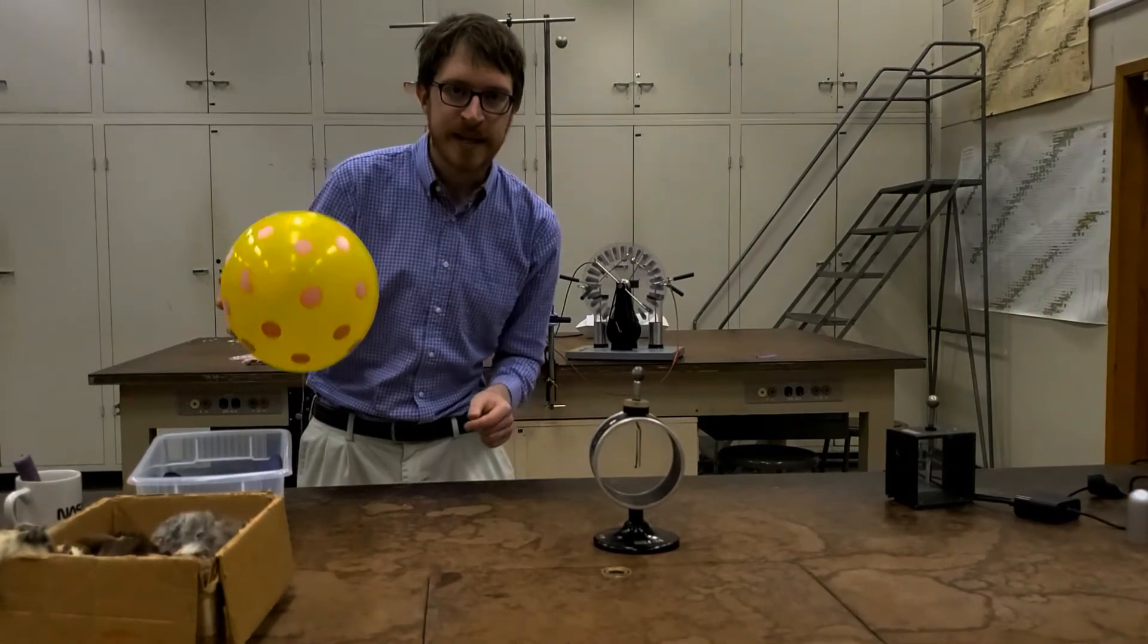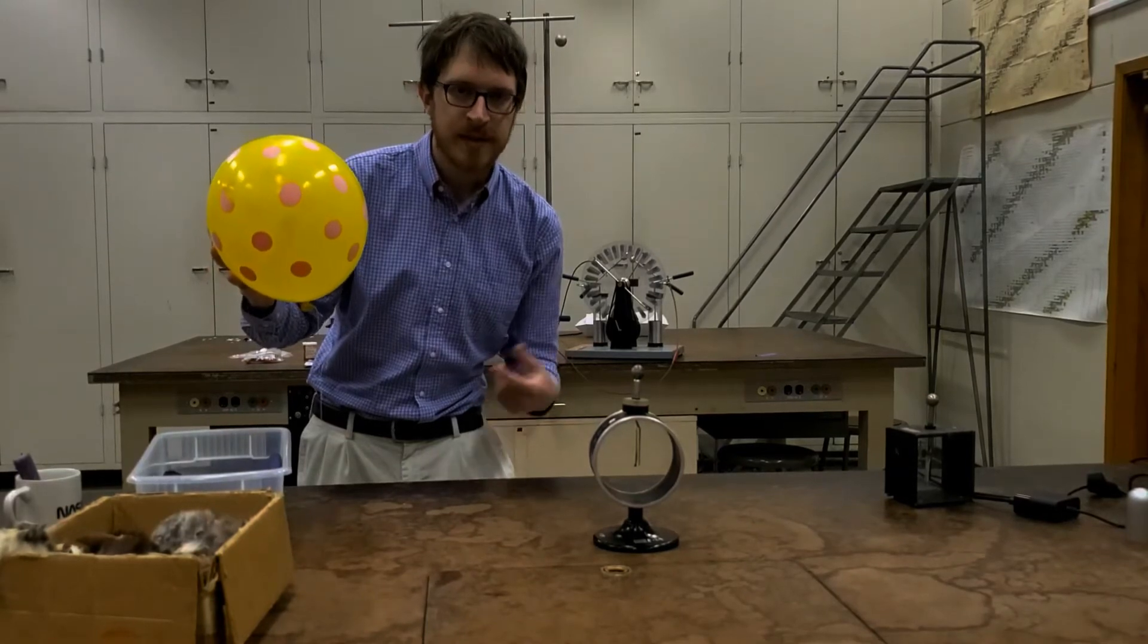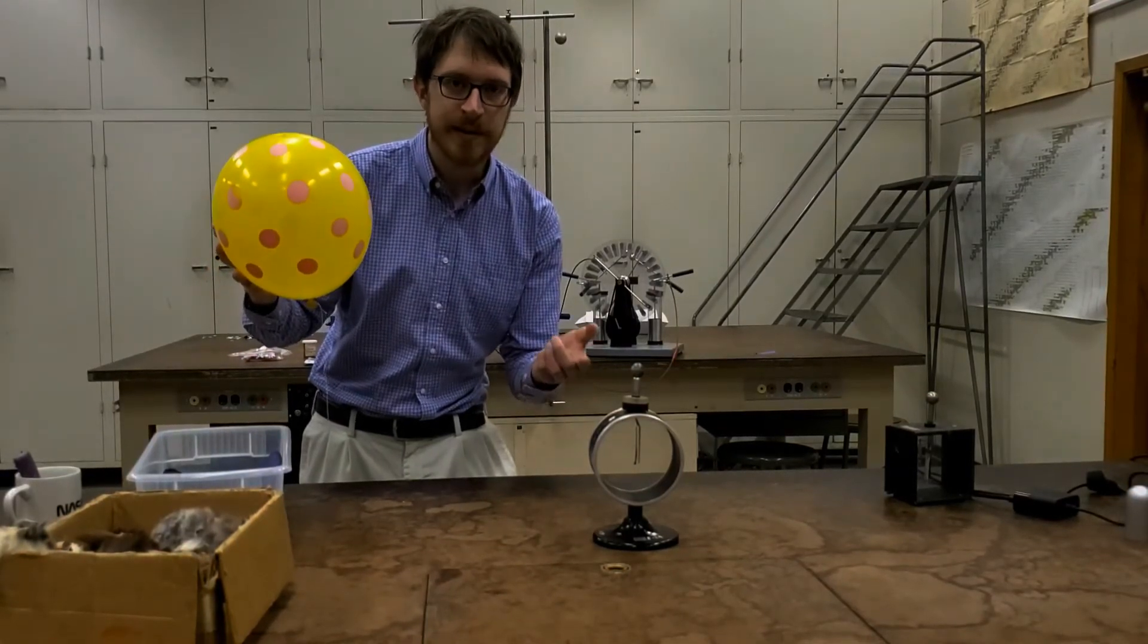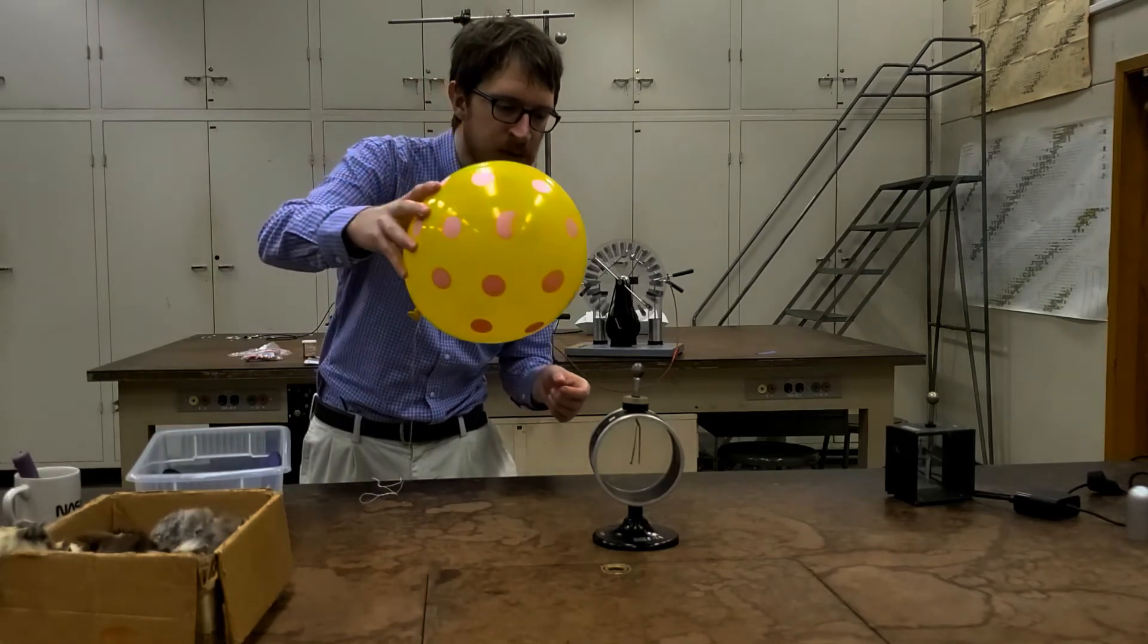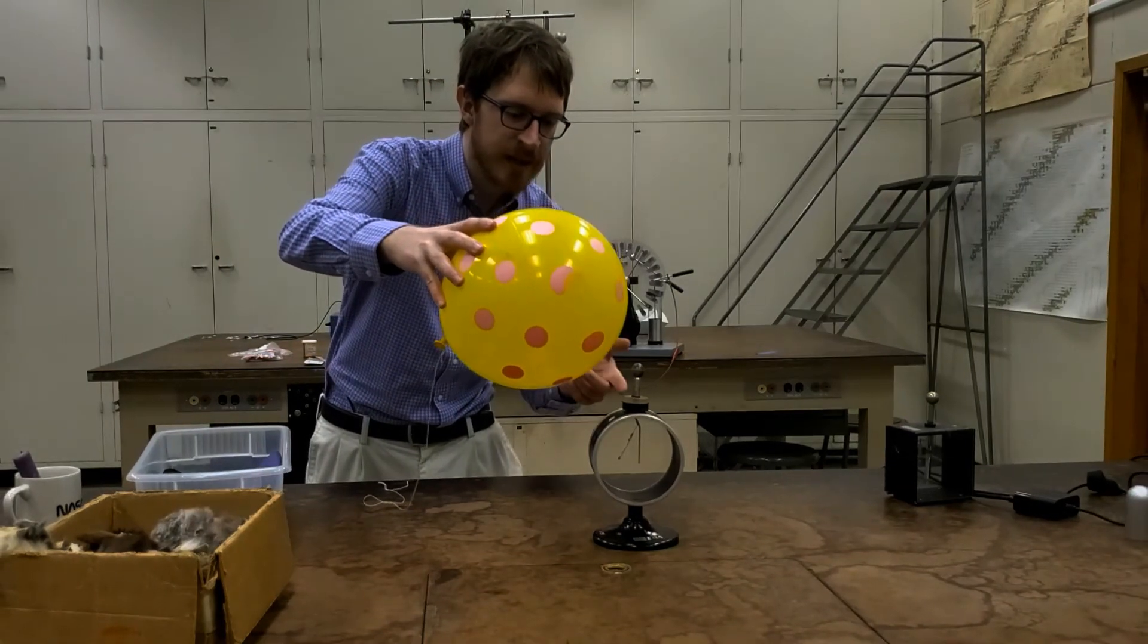So now I'm going to take this negatively charged balloon, and I'm going to use it to charge up this electroscope through induction. I'm going to take this balloon, bring it close but not actually touching. You can see that the leaves of the electroscope are separated.